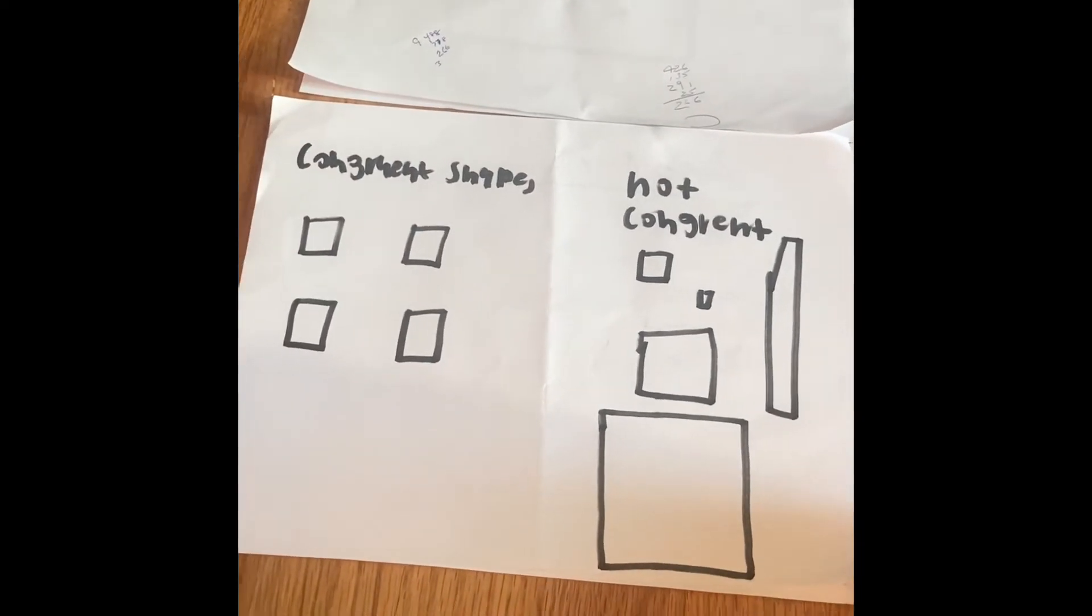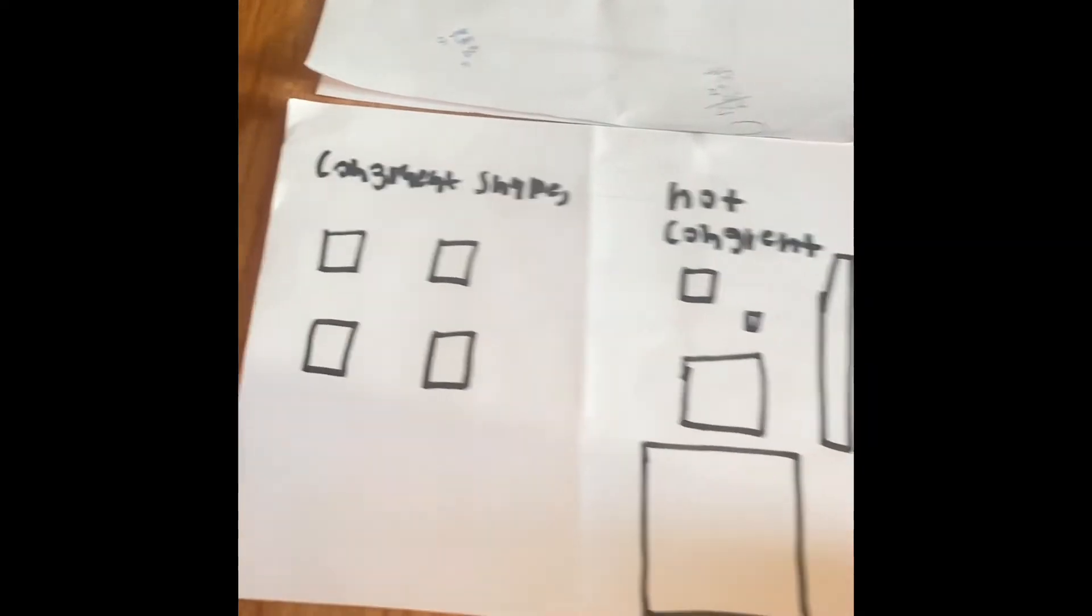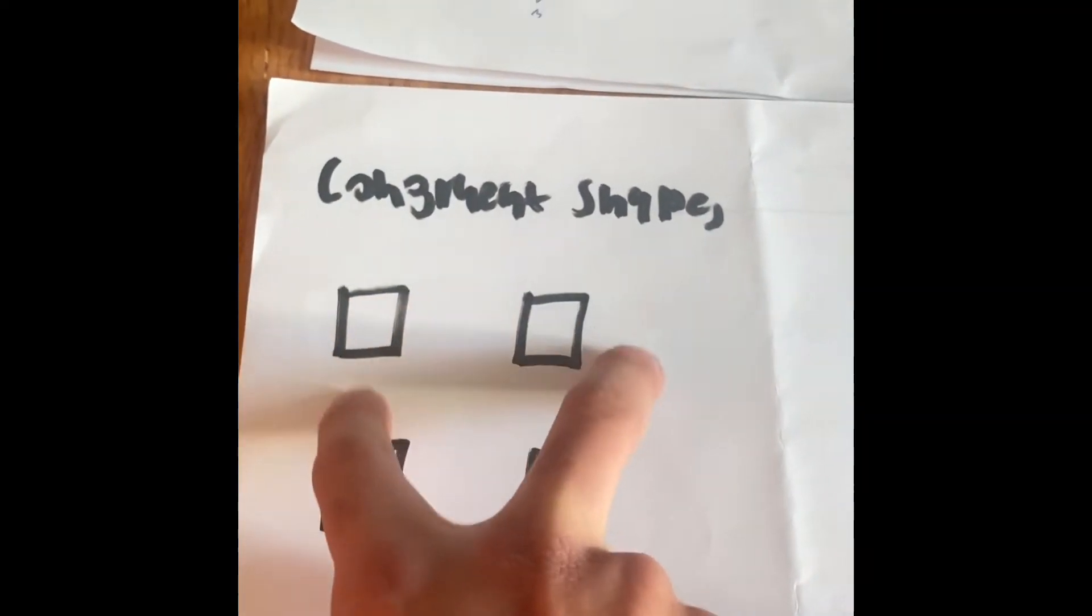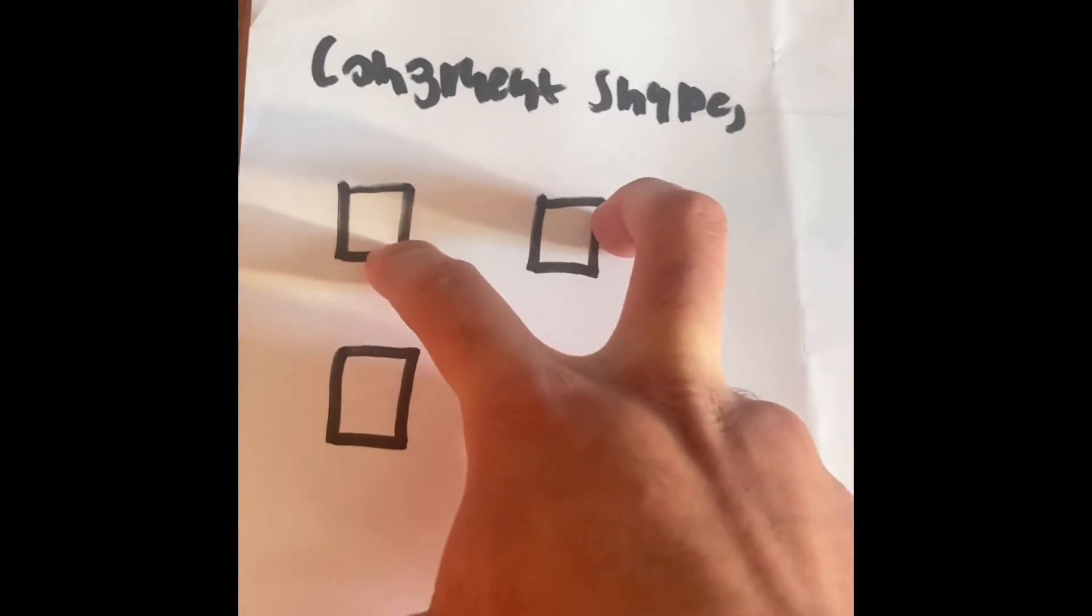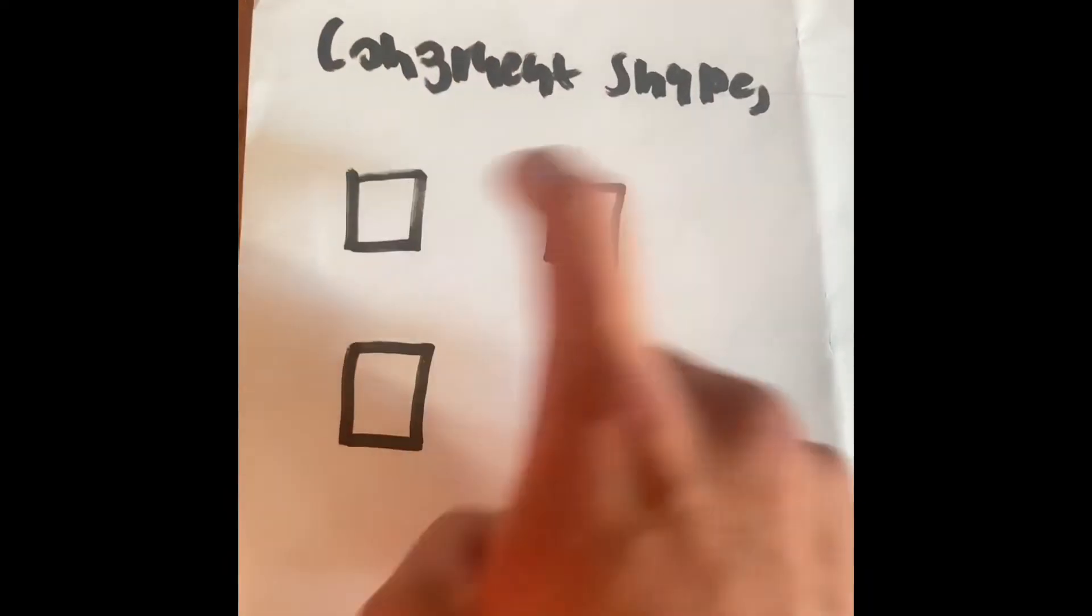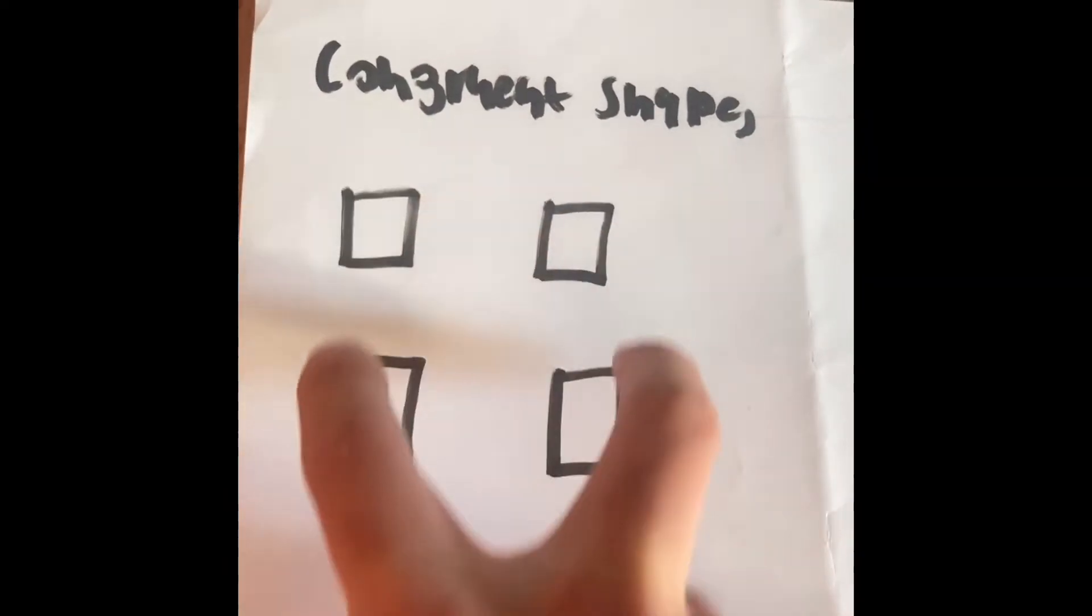Well, congruent means there are similarities, and they're the same between both of the shapes. Like, for example, these shapes are congruent because they're all the same.